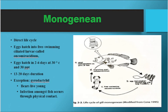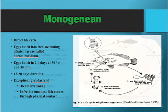Monogeneans also have a direct life cycle. Their eggs hatch into free-swimming ciliated larvae called Onchomiracidium. Eggs hatch in 2 to 6 days at 30 degrees and 30 parts per thousand salinity. Their life cycle lasts 13 to 20 days, with the exception of gyrodactylids which birth live young. Infection among fish happens through physical contact.